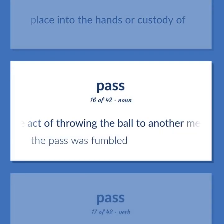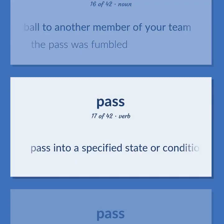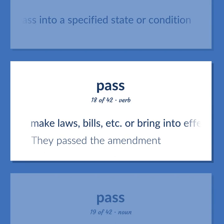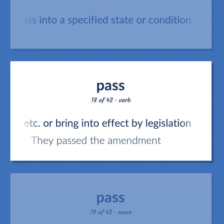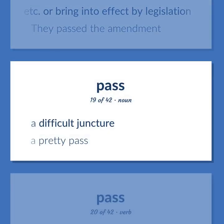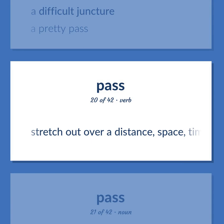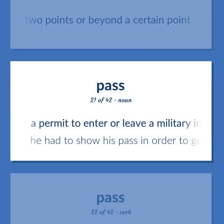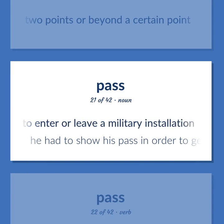Sports: the act of throwing the ball to another member of your team — the pass was fumbled. Pass into a specified state or condition. Make laws, bills, etc., or bring into effect by legislation — they passed the amendment. A difficult juncture — a pretty pass. Stretch out over a distance, space, time, or scope; run or extend between two points or beyond a certain point. A permit to enter or leave a military installation — he had to show his pass in order to get out.